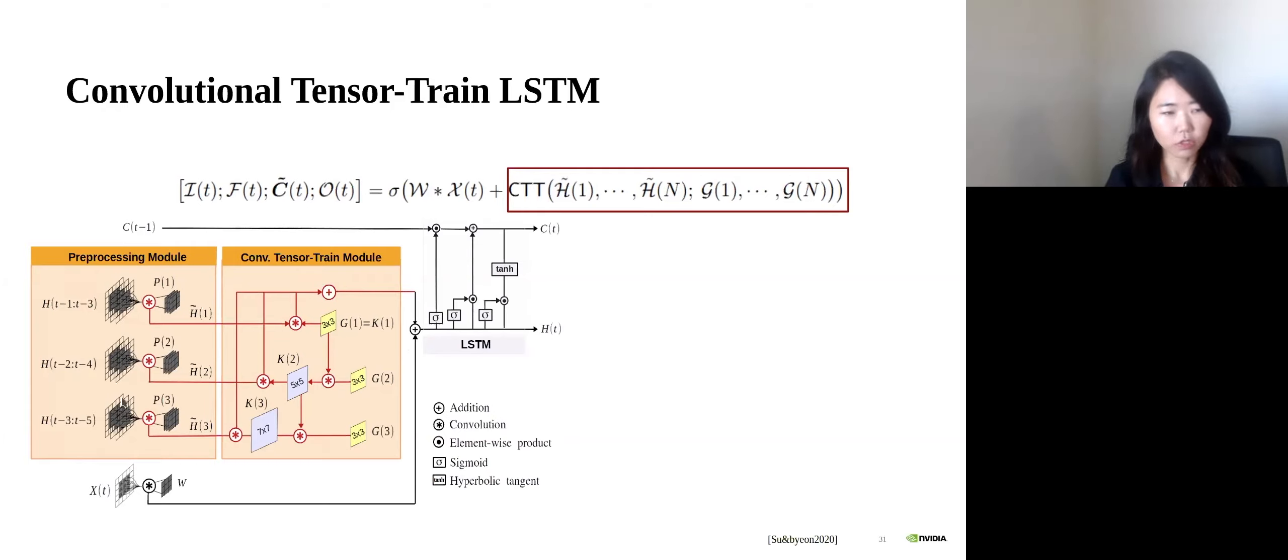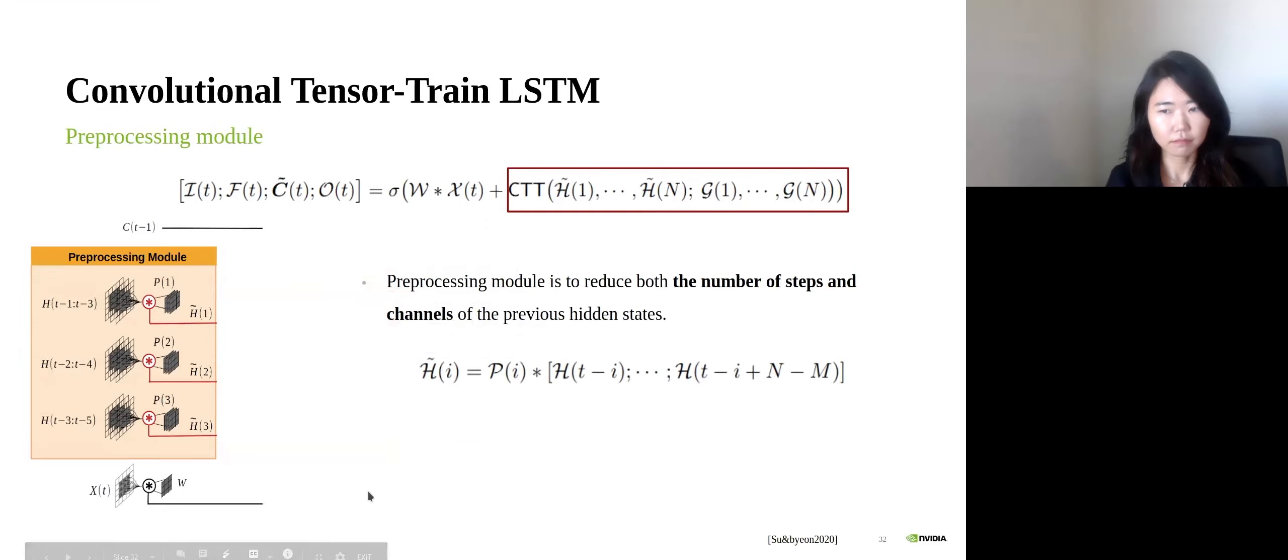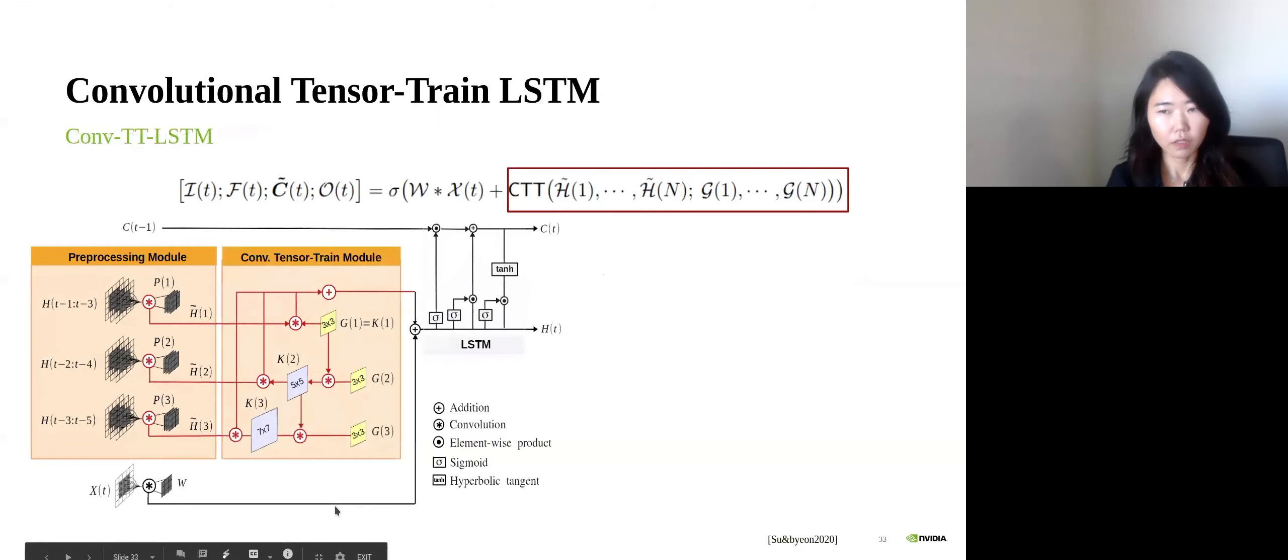So far we saw the main part of convolutional tensor-train module. Now I will introduce the preprocessing module on the left side. The preprocessing module is to reduce both the number of time steps and the channels of the previous hidden states. It subgroups the hidden states and reduces the number of channels with the convolutions. In this figure, it takes a hidden state h t minus 1 to t minus 5 and processes to h tilde 1 to 3. So these h tildas are given to the convolutional tensor-train module. Then the output of convolutional tensor-train module is going to LSTM. This is exactly this part with the LSTMs.